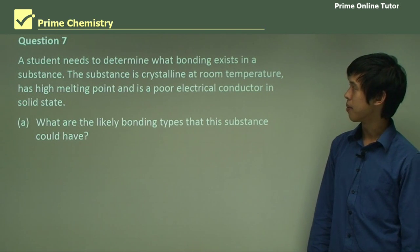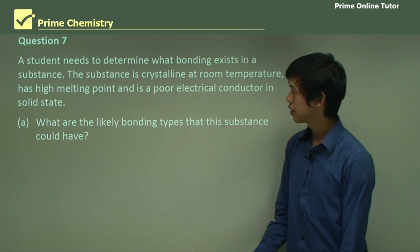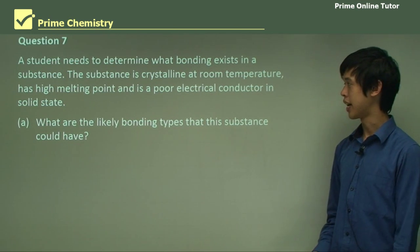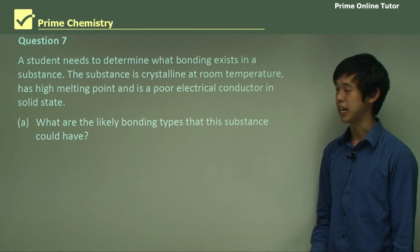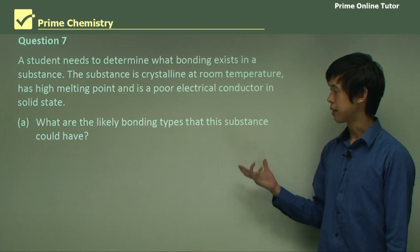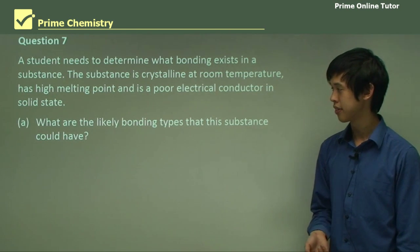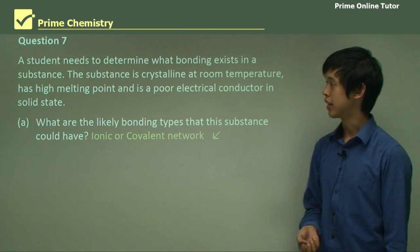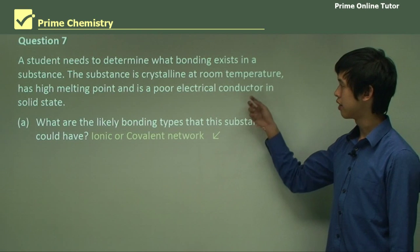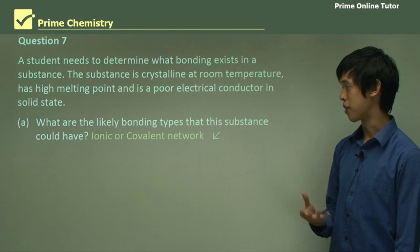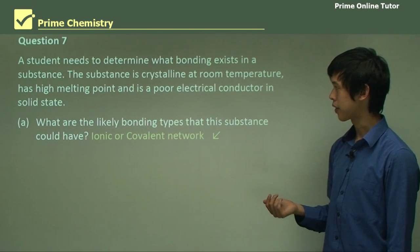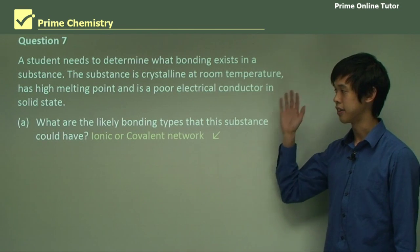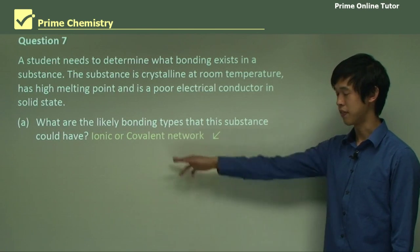Question: A student needs to determine what bonding exists in a substance. The substance is crystalline at room temperature, has a high melting point, and is a poor electrical conductor in solid state. What are the likely bonding types? There's more than one answer — it could be either ionic or covalent network. Both are hard or crystalline, both have high melting points, and both are poor electrical conductors in solid state. So we can't determine which one it is from this information alone.